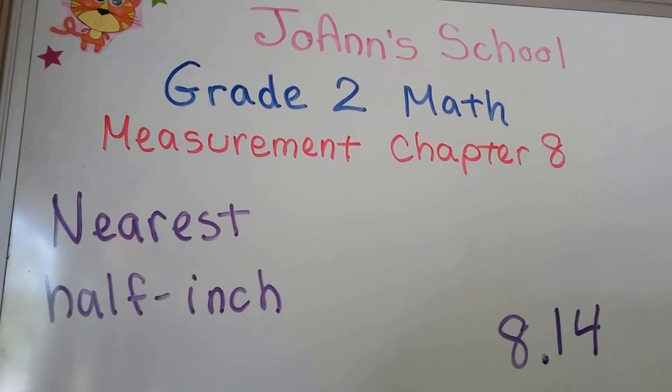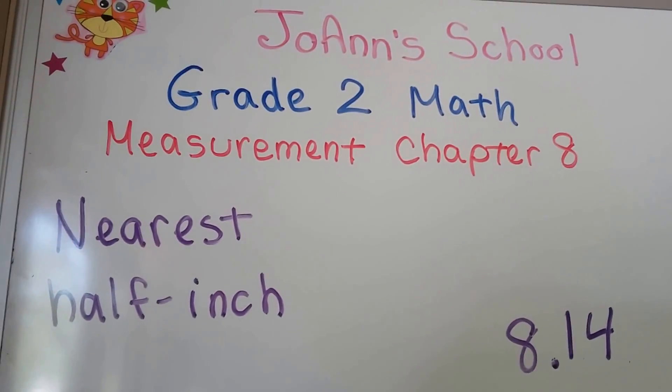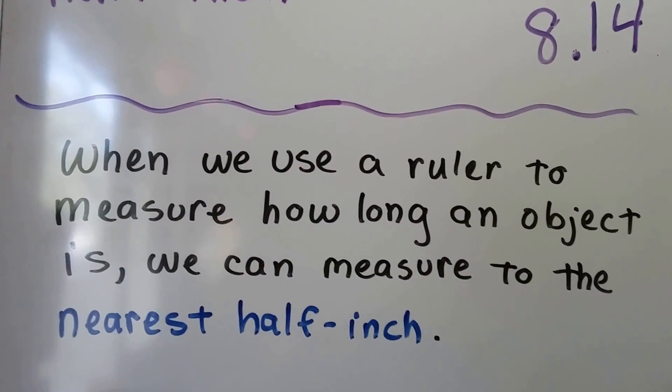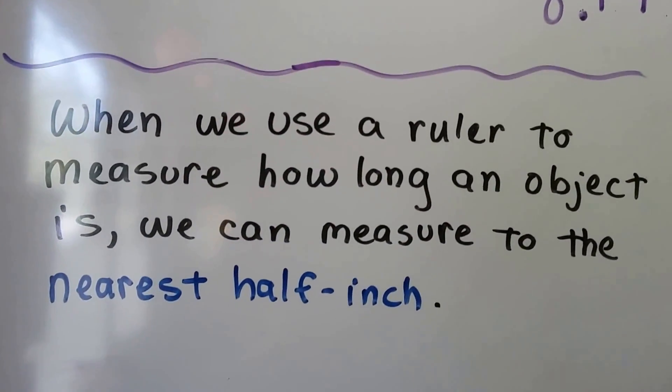We're going to measure to the nearest half inch. This is lesson 8.14. When we use a ruler to measure how long an object is, we can measure to the nearest half inch.